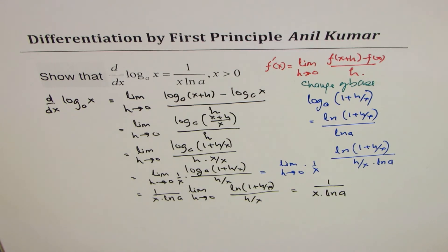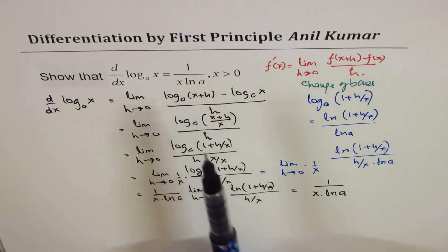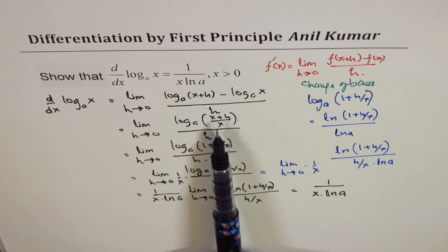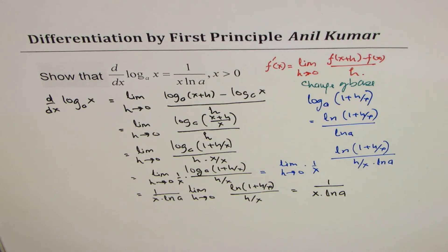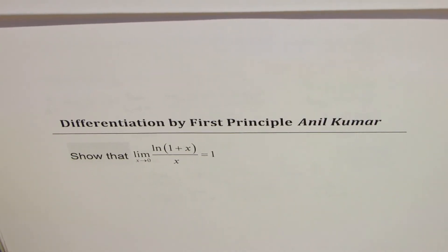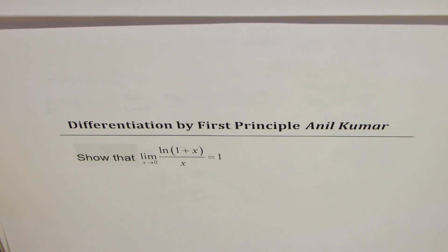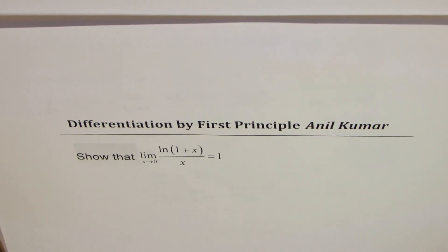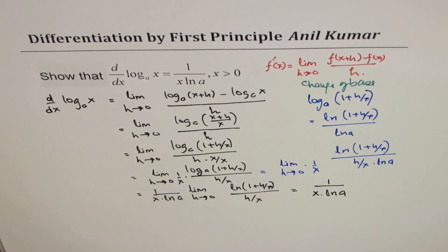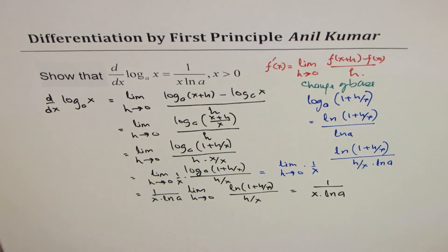That is how we find the derivative of a logarithmic function using first principles. The concept is to use the first principle formula, apply logarithmic rules, and use the standard limit that ln(1 + x)/x approaches 1 as x approaches 0. I'll provide a link showing how to prove that limit. I hope the process is clear. Feel free to share your comments and views. If you like and subscribe, that'd be great. Thank you and all the best.